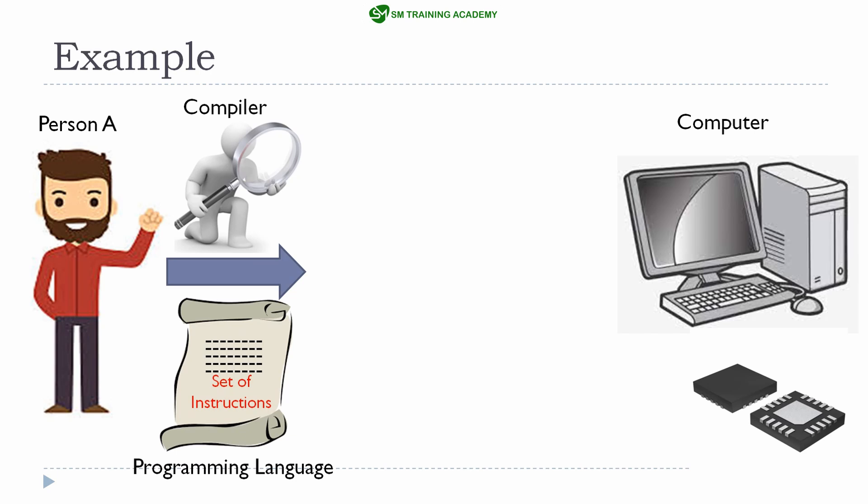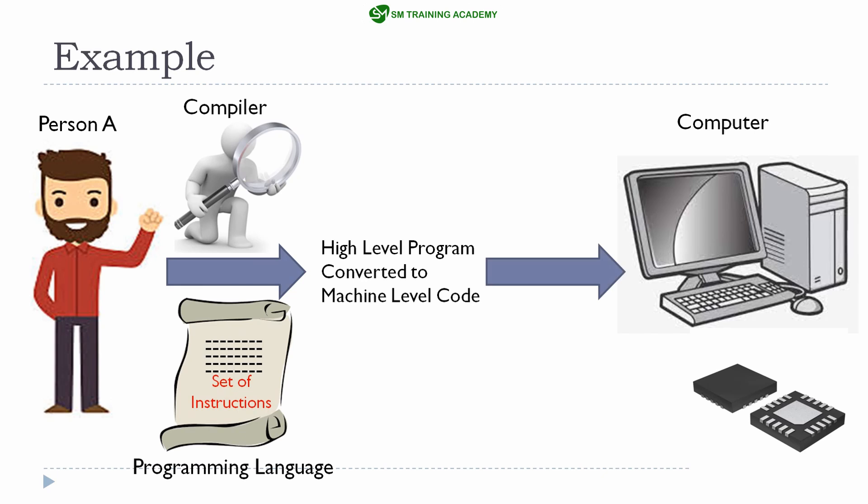Once the program is error-free, tools within the IDE convert the high-level program written by person A into machine-level code. Machine-level code is nothing but zeros and ones, which the microcontroller or computer understands. Once the high-level program has been converted to machine-level code, that code is dumped to the computer or microcontroller for performing the required task. This is the basic flow of creating an executable file for the computer or microcontroller.